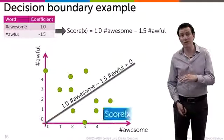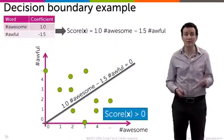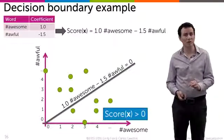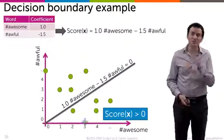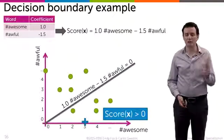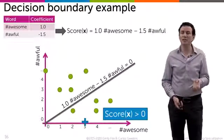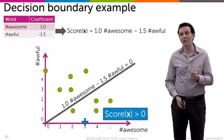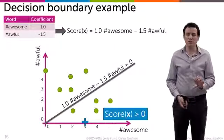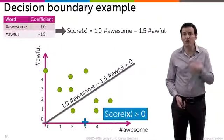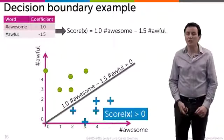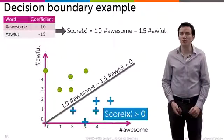Everything below that line has a score greater than zero for any of those points. For example, take the point three awesomes and zero awfuls — that has a score greater than zero, so we're going to classify that as plus one, similarly to all those points below the line.